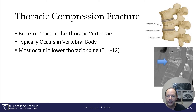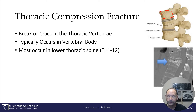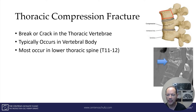Now with that anatomy, you can understand that most thoracic compression fractures occur in the body — the front portion of the vertebral body. It's basically a fracture or a crack. It typically occurs in the lower thoracic region. Here's an illustration of an x-ray where you can see the vertebral body and the one below, and here is actually a fracture where the vertebral body is fractured. Ouch.